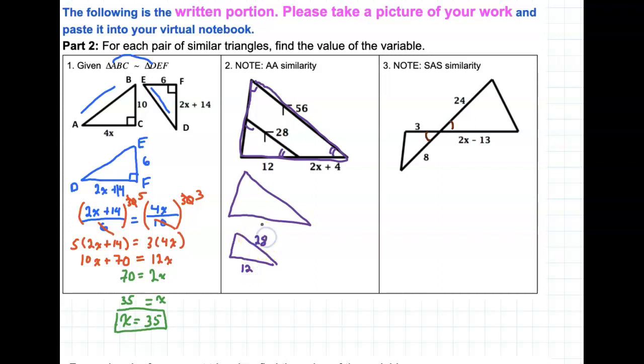So this little one was 12 and 28, and then the big one was 12 plus 2X plus 4, so that's 16 plus 2X. And then we have 56 here for the long side.